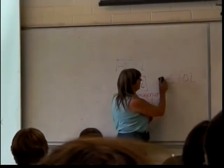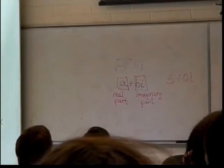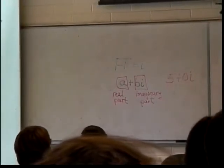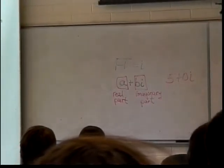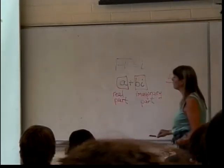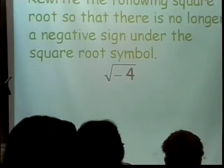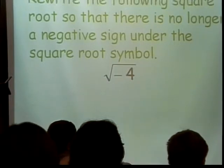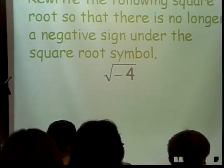But before we do that, we want to do this. We'll skip this page and go right here. We want to rewrite the square root so that there's no longer a negative sign under there. If you ever have a square root with a negative sign under it, you must rewrite it so that there's no negative sign. How do I get rid of the negative sign? That's where the i comes in.